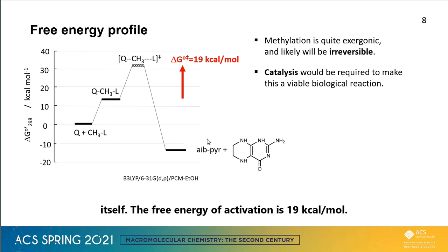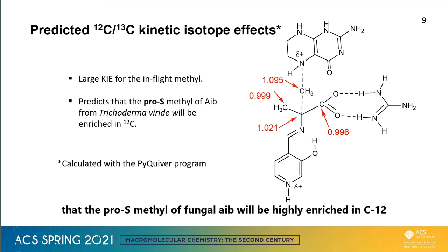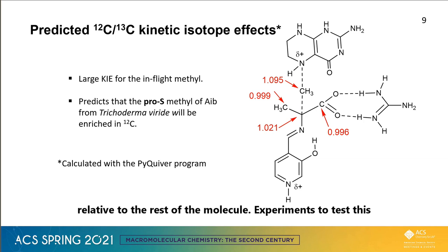The free energy of activation was 19 kcal/mol. As one might expect, there is a large normal isotope effect for the in-flight methyl carbon. Thus, these calculations lead to the prediction that the pro-S methyl of fungal AIB will be highly enriched in C-12 relative to the rest of the molecule. Experiments to test this prediction are underway.